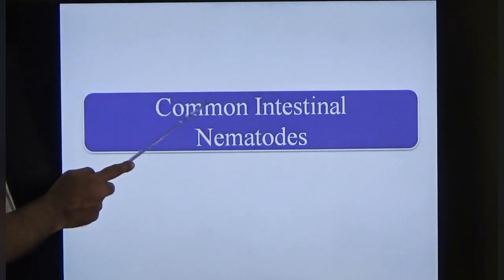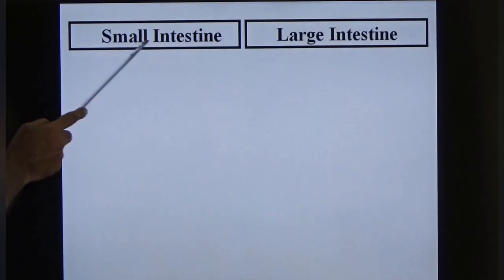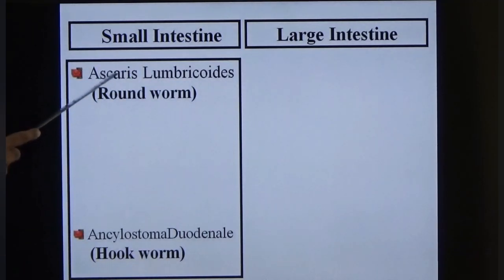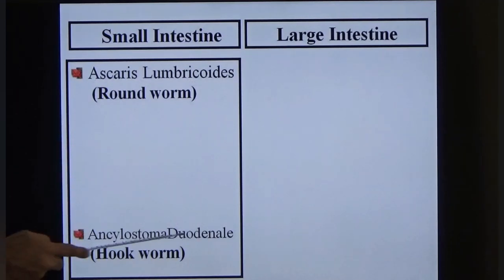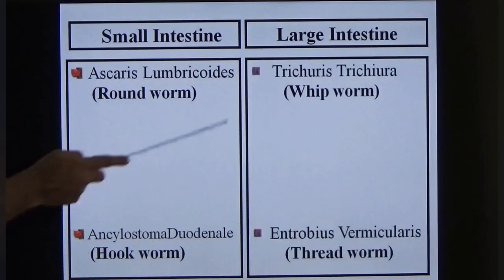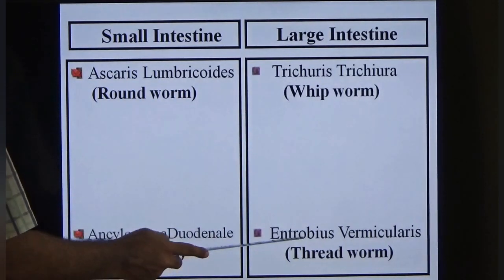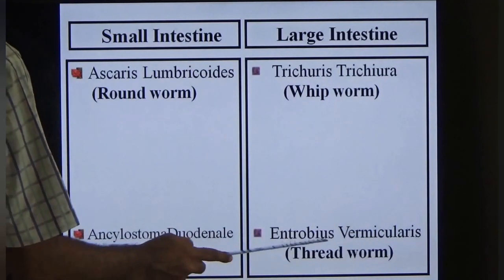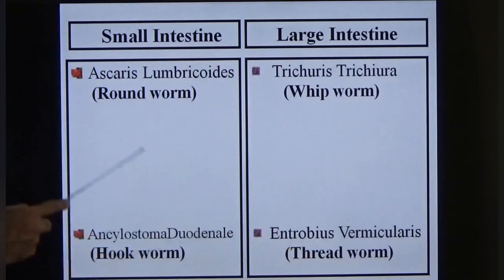For better understanding, intestinal nematodes are divided into small intestinal and large intestinal nematodes. Small intestinal nematodes include Ascaris lumbricoides (roundworm) and Ancylostoma duodenale (hookworm). Large intestinal nematodes include Trichuris trichiura (whipworm) and Enterobius vermicularis (threadworm/pinworm). Today we are discussing Ascaris lumbricoides, the roundworm.